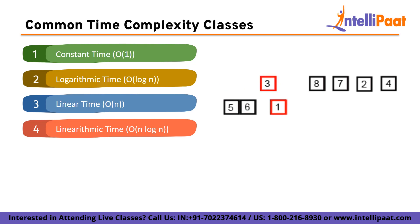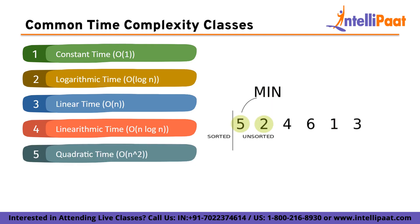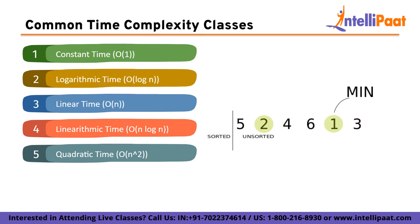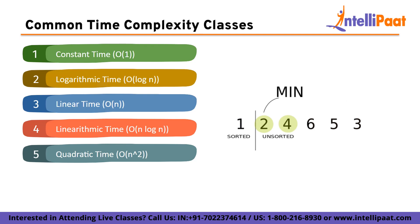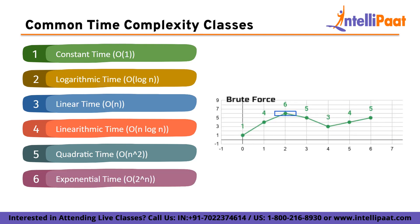Next on the list is quadratic time, or O(n²) complexity. Algorithms with quadratic time complexity have a runtime that grows exponentially with the input size. These algorithms typically involve nested iterations. Examples include selection sort and bubble sort, where each element needs to be compared with every other element.